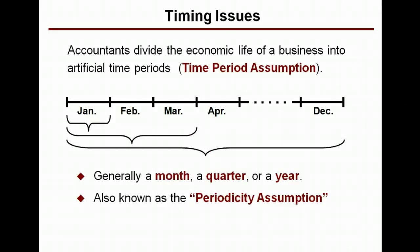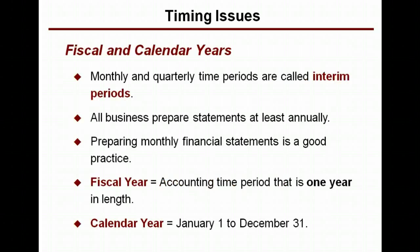What period of time will you cover? You can make financial statements for a month or a quarter, semi-annually, or for a year. This is known as the periodicity assumption. We like to make our financial statements for periods of time so that we can compare them from month to month, quarter to quarter, or year to year. You're required to make financial statements at least annually, but you can make them over shorter periods of time — this is called interim reporting periods.